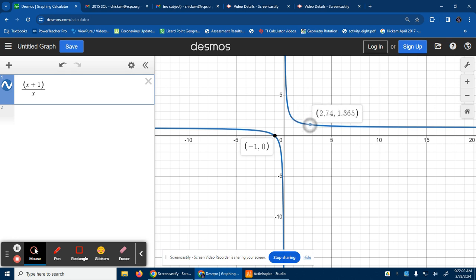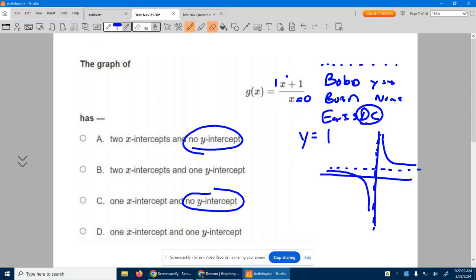This graph right here, he never is going to touch the x-axis, nor the y. He keeps getting closer and closer, but never is going to touch. So our answer is, it has one x-intercept that we saw right there, but it never touches the y.